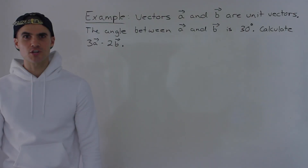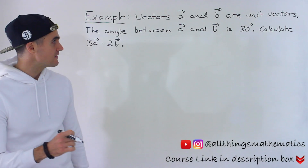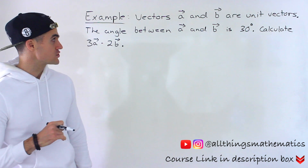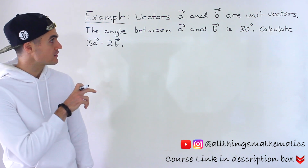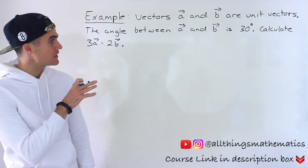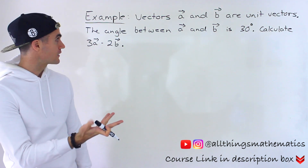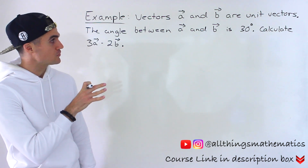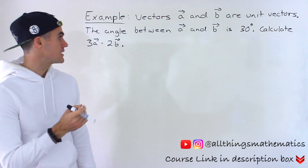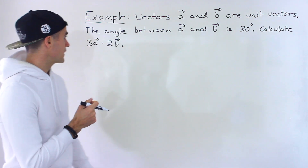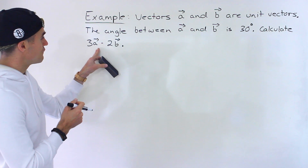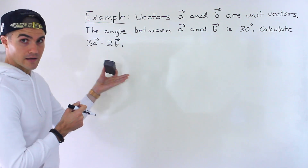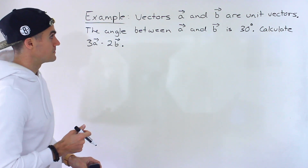Welcome back everyone. Patrick here. In this next question dealing with vector addition, we have vectors A and B and we're told that they're unit vectors and also told that the angle between them is 30 degrees. We have to calculate the vector 3A minus 2B.